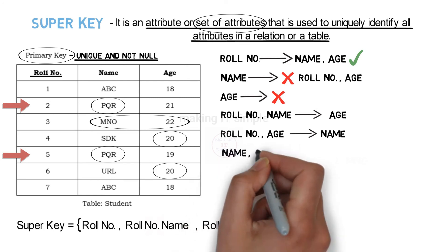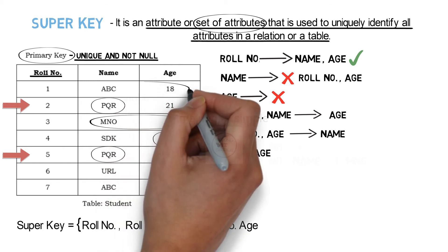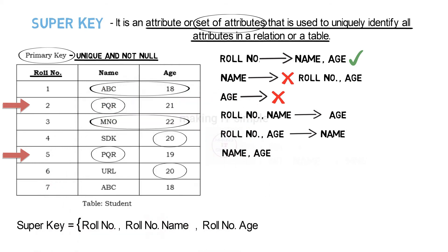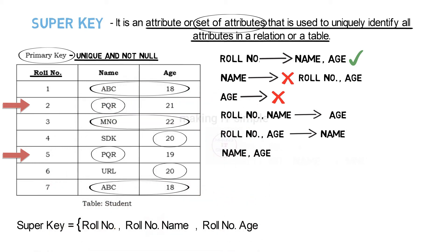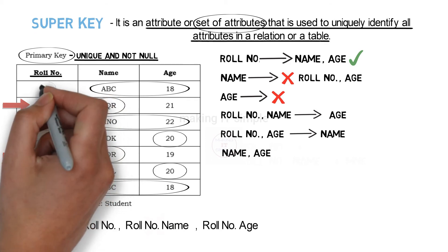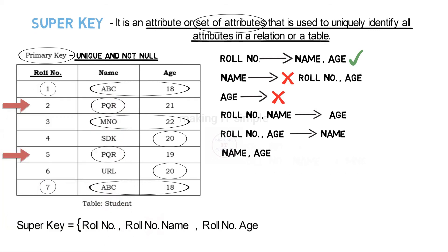Now what about name and age? Both attributes have redundant values — there are students with the same name and age. So by using name and age we cannot find role number. Due to redundancy we will obtain different values. So {name, age} is not a super key.